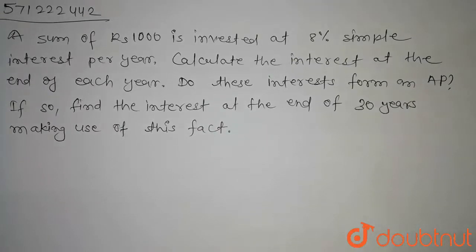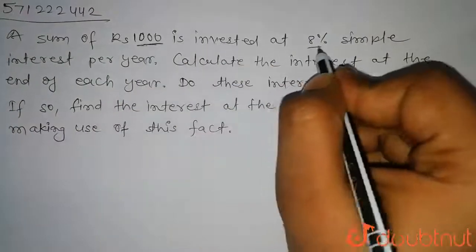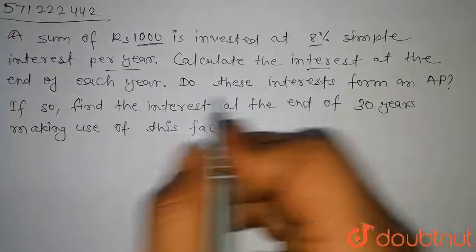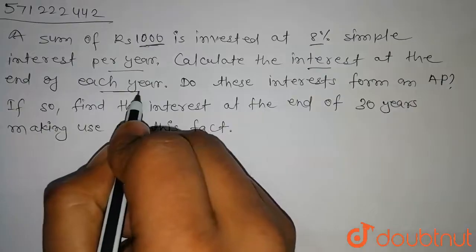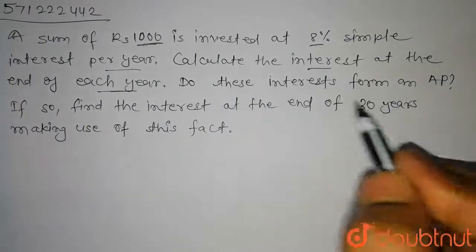Hello students, in this question it is given that a sum of rupees 1000 is invested at 8% simple interest per year, and we have to calculate the interest at the end of each year and also check whether these interests are forming an AP.